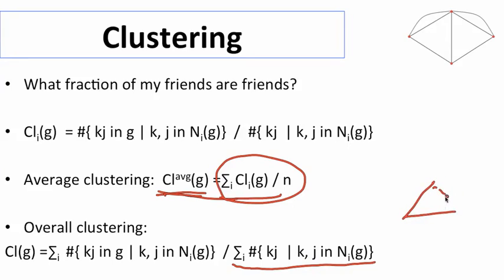what's the chance that it's connected and those others are connected. And so instead of first doing this node by node and then averaging,